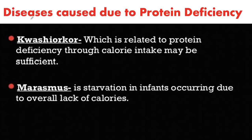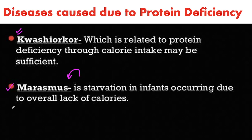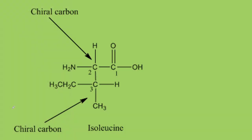First of all, we will talk about diseases caused due to protein deficiency. The first disease is Kwashiorkor, which is related to protein deficiency while calorie intake may be sufficient. The other disease is Marasmus — Marasmus is starvation for infants and lack of calories is the cause of this disease.